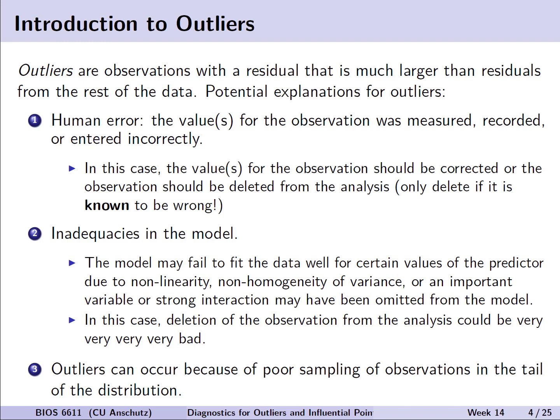Outliers are observations where we have a residual value that is much larger than the residuals that occur in the rest of the data. Unfortunately, there's multiple explanations for outliers, and they may have different ways to address. One is human error, where the value or values for the observation are measured, recorded, or entered into the dataset incorrectly. In this case, the values for the observation should be corrected or the observation should be deleted from the analysis if we know it to be wrong or biologically impossible.